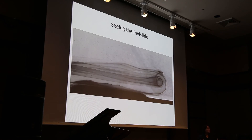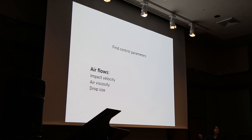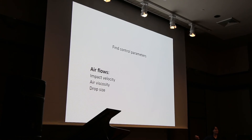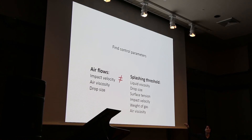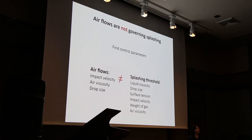Are these air flows really the cause of why a splash disappears at low pressure? In order to find that out, we look at the control parameters that govern these phenomena. For the air flows, it's actually remarkably simple — the only things that determine them are the impact velocity, the air viscosity, and the drop size. But if we look at the parameters that determine the splashing threshold at lower pressure, it turns out to be way more complicated — a whole bunch of parameters are involved. This tells us these aren't the same control parameters, and therefore the air flows aren't what's governing the splash. So we still don't have the answer, which is good because it gives us a lot still to do.